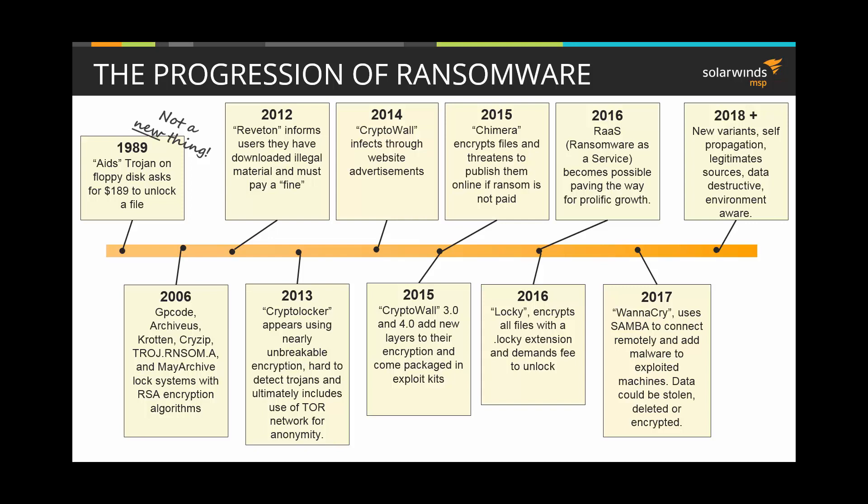Ransomware has evolved significantly over the last two decades, as you can see from just some examples of the various variants out there. They'll continue to evolve with new variants and new threats, continue to be self-propagating and self-replicating using bogus and legitimate sources, and continue to be destructive to your data and infrastructure. Keep up with your patches, updates, AV, and backups to ensure that you are protected.